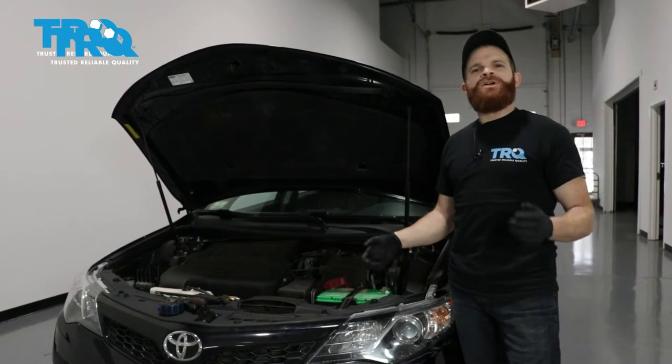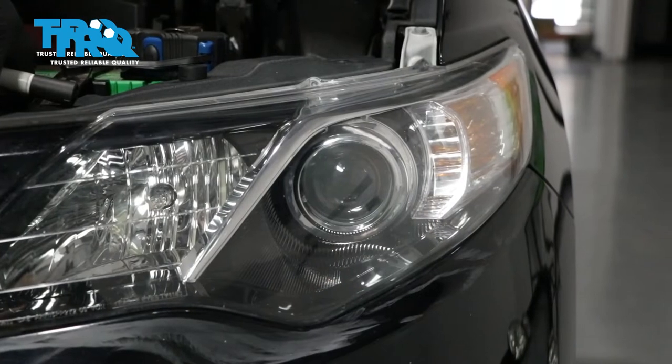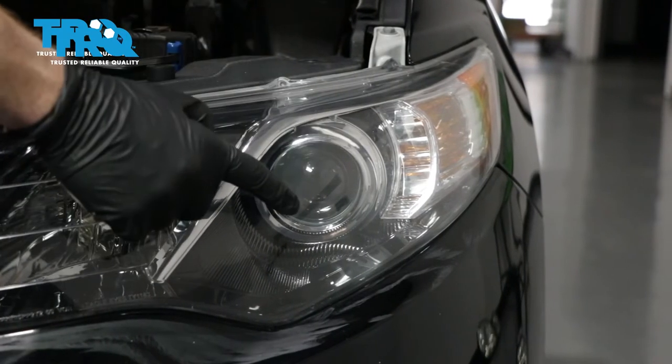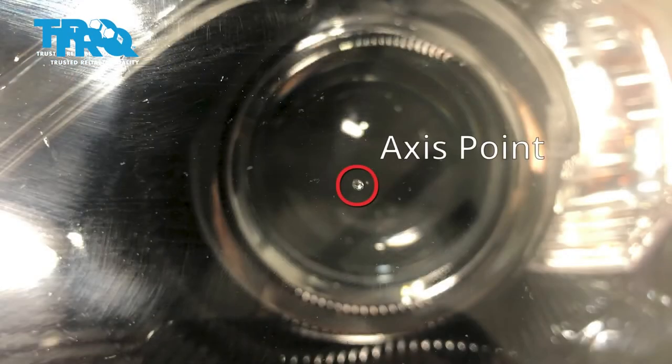This is going to be a general tutorial on how to aim your brand new TRQ headlamp assemblies. Looking at your brand new TRQ headlamp assembly, you're going to see where your low beam is, and you'll see a little dot right in the center. That is the axis point.